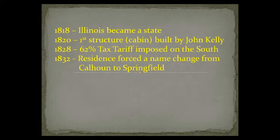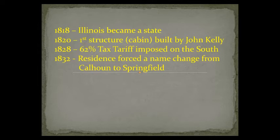Let's take a look at some chronological order of how Illinois and Springfield came to be. So in 1818, Illinois became a state. In 1820, that actual first structure — the cabin built by John Kelly. In 1828, the 62% tax tariff was imposed on the South, and we'll get into that. In 1832, the residents here forced a name change from the city of Calhoun to Springfield. Let's talk about that.